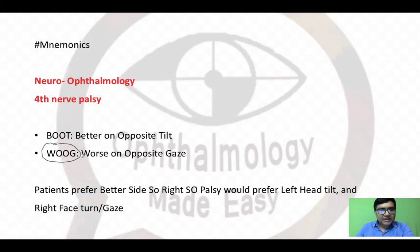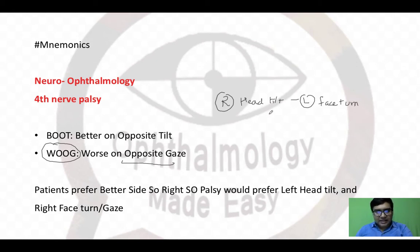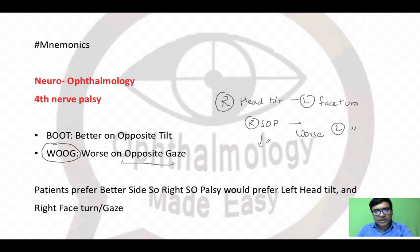The second mnemonic is VOOG, which stands for 'worse on opposite gaze.' A right head tilt would be worse on left face turn. So for right superior oblique palsy, the condition is worse on left face turn, meaning the patient would prefer a right face turn.